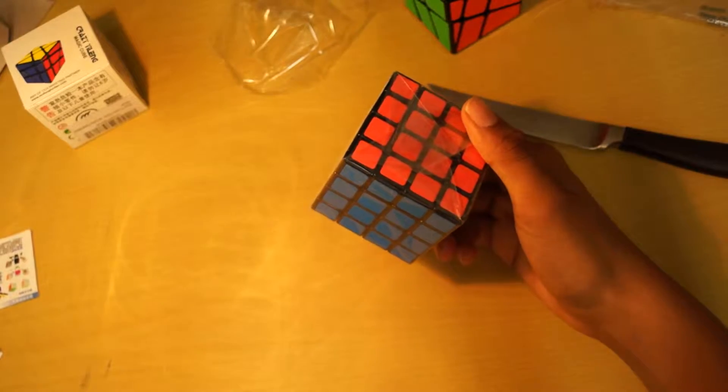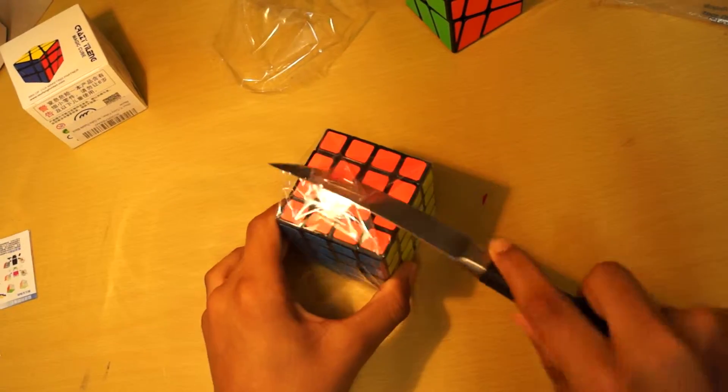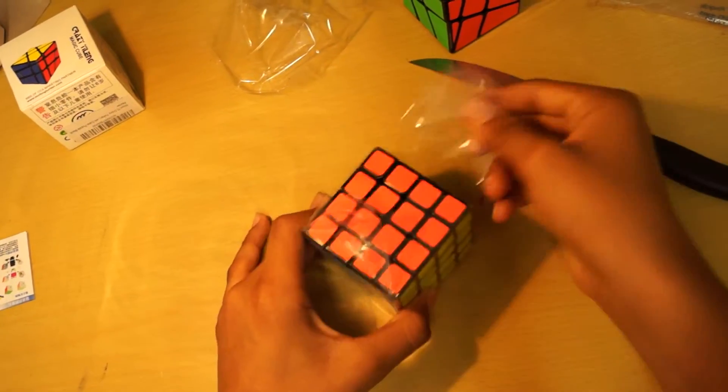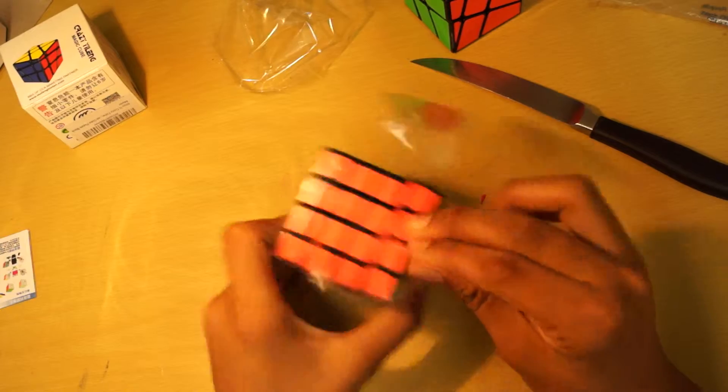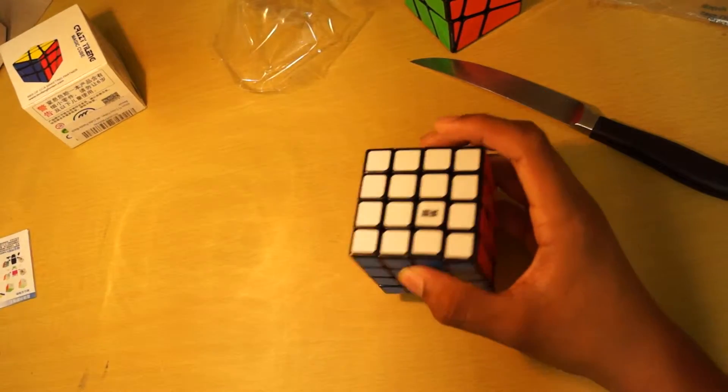That looks very nice. So the stickers are smaller than the Aosu. Or actually, are they the same size? Whatever. I'm pretty sure they're both the same cubes in a way.